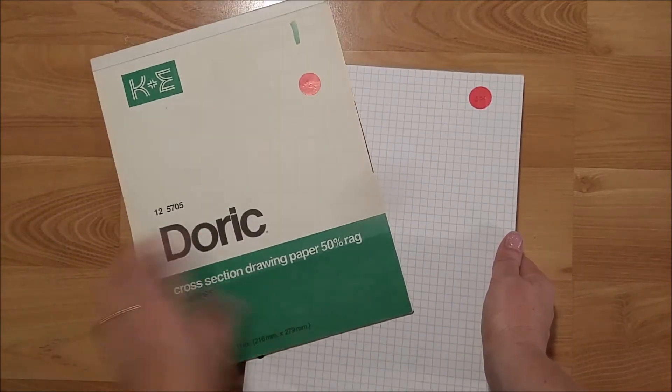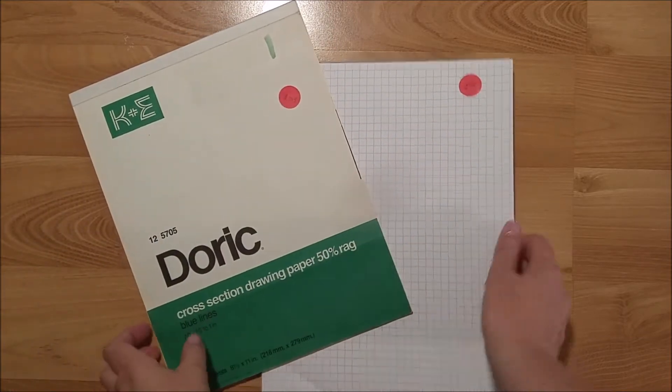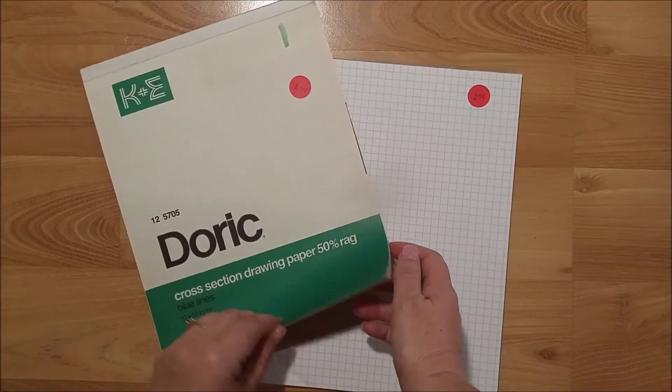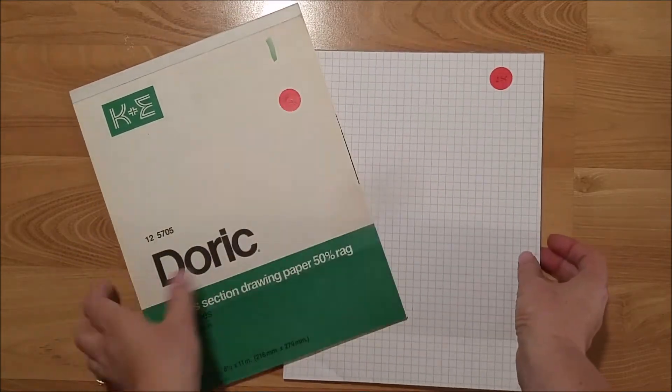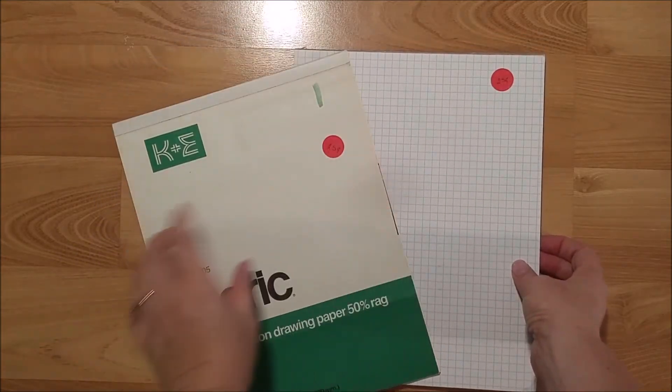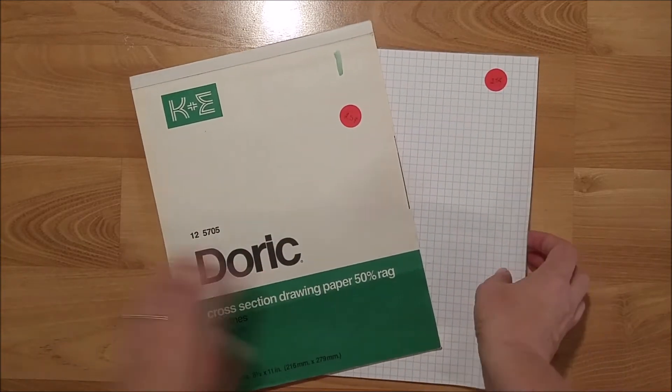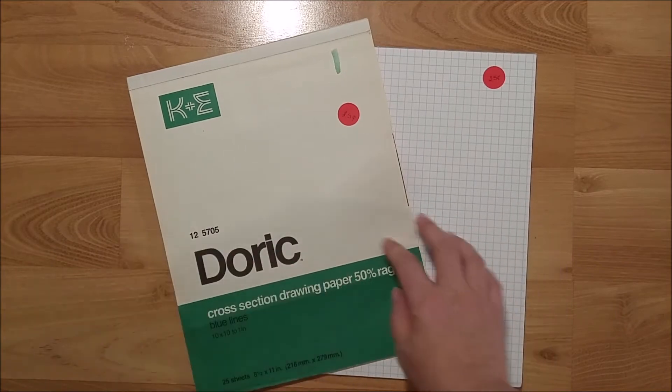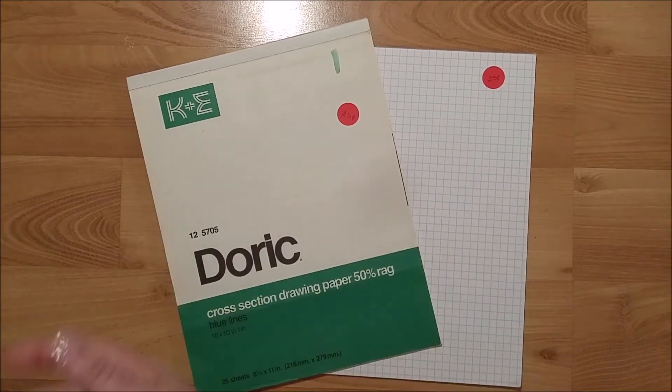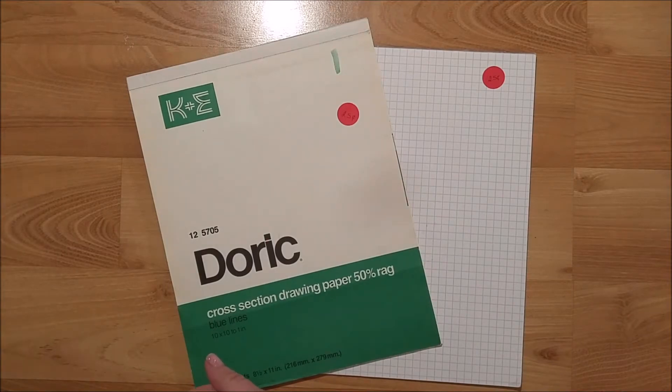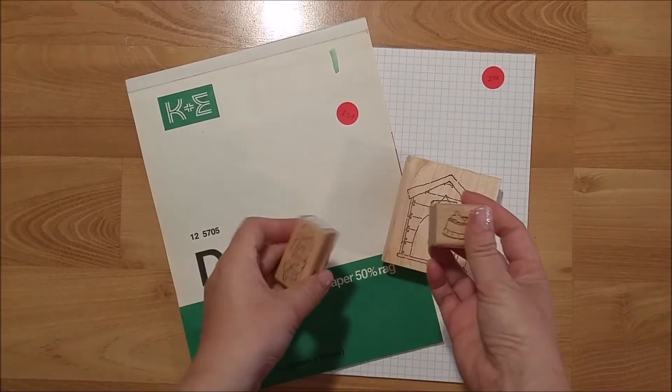Grid paper. This is cross-section drawing paper and some graph paper. They were labeled 25 cents a piece, but the guy ended up giving both of them to me for 10 cents. I'm going to use these for a junk journal that I'm getting ready to make.